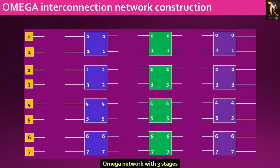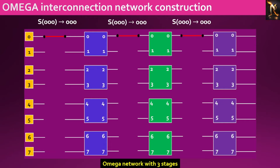Now let's attempt to construct an omega network with three stages, accommodating eight input ports identified as 0 through 7. We will first consider the port denoted by 000 and apply a shuffle. If we apply shuffle to 000, the LSB shifts to the left by one bit position, and the bit pattern remains the same. So input port 000 gets connected to the upper port of the first stage switch. We will then apply a similar technique to establish the connections to the next stages.